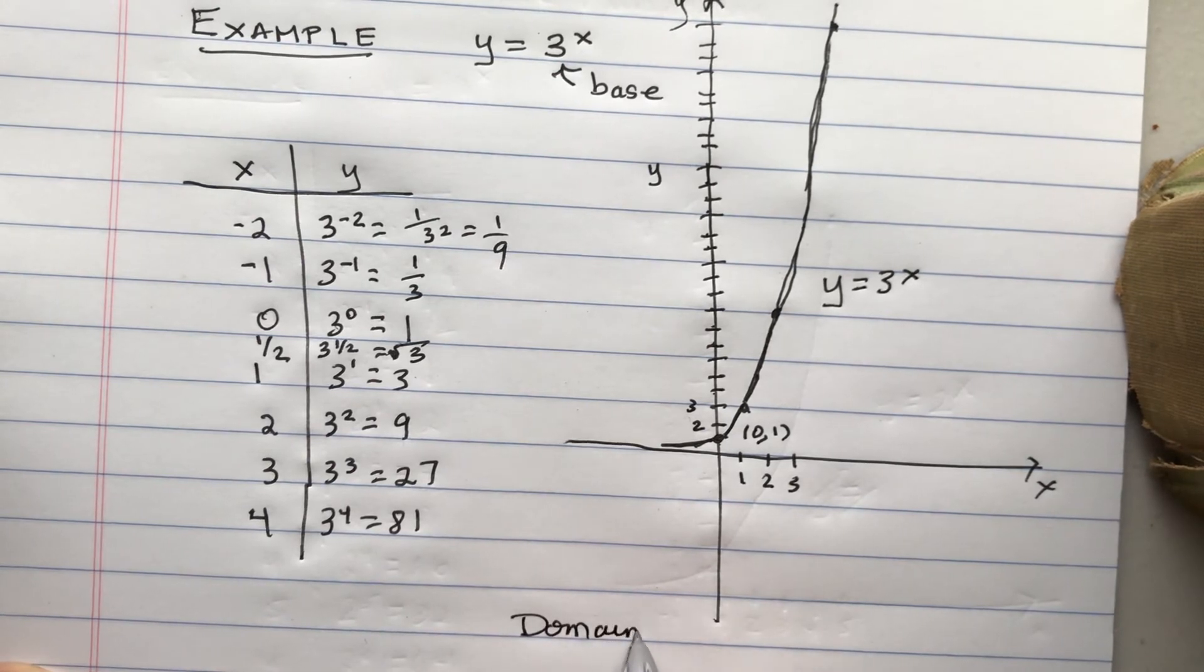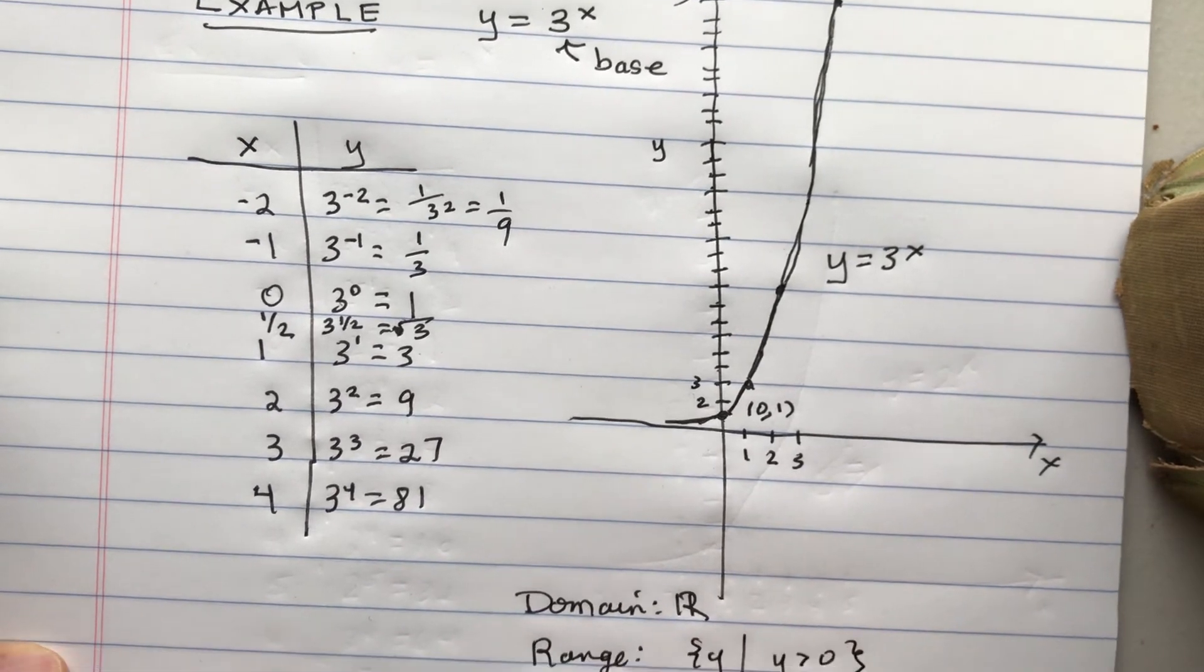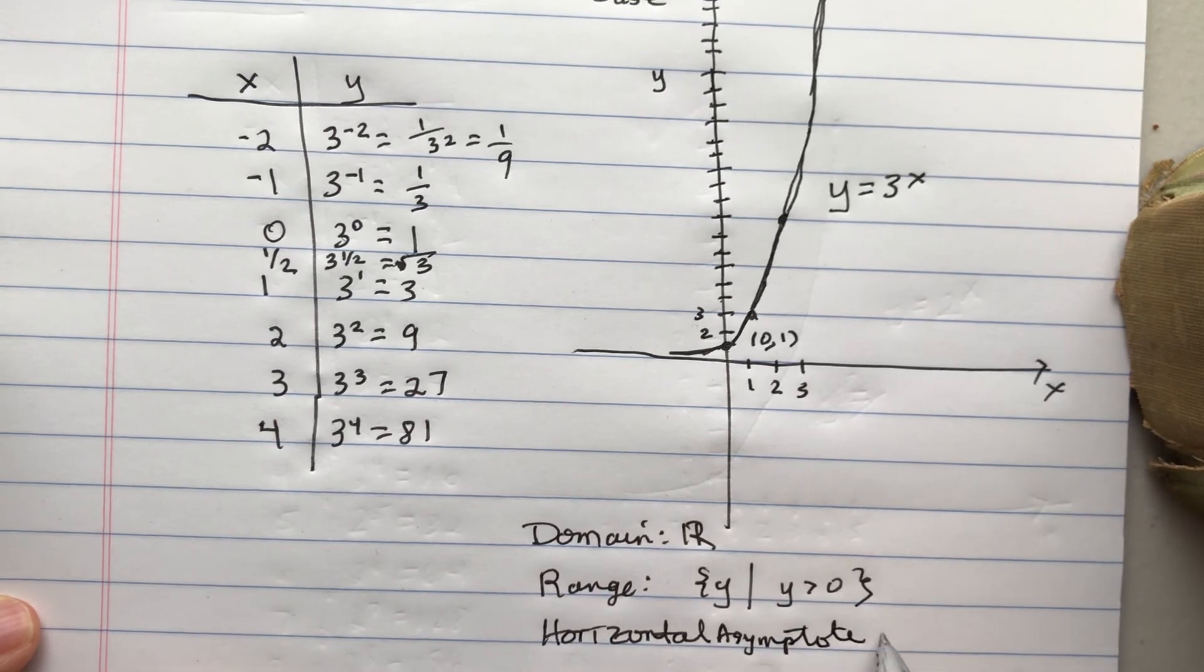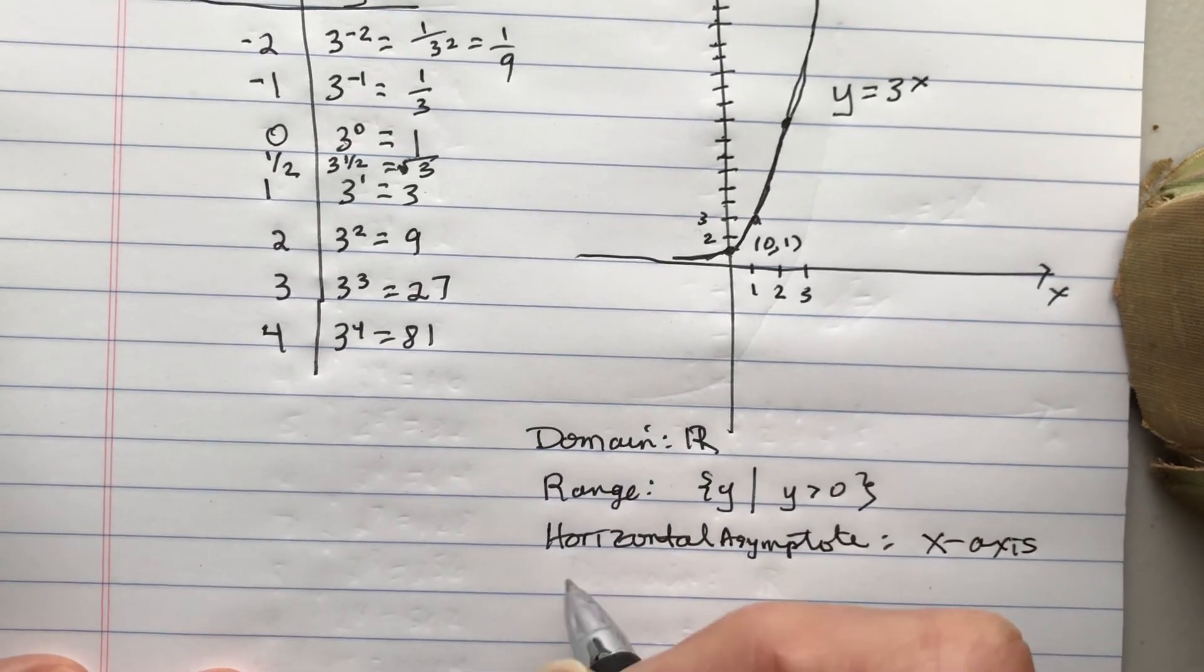The domain is R, the range is all y such that y is greater than 0. And the horizontal asymptote is the x-axis. And it's increasing.